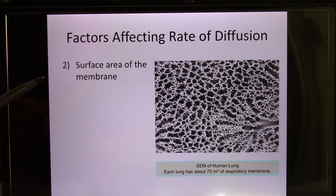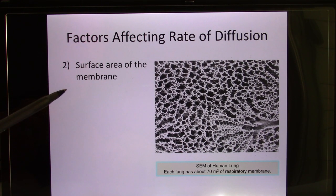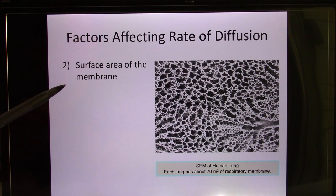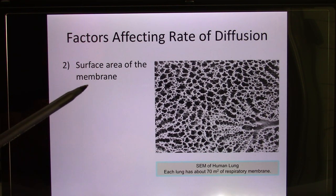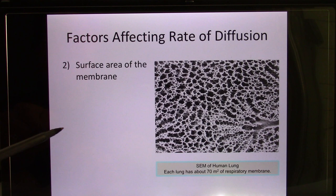When the lung shrinks — pneumothorax happens — the patient cannot get enough oxygen. The reason is because the surface area decreases.